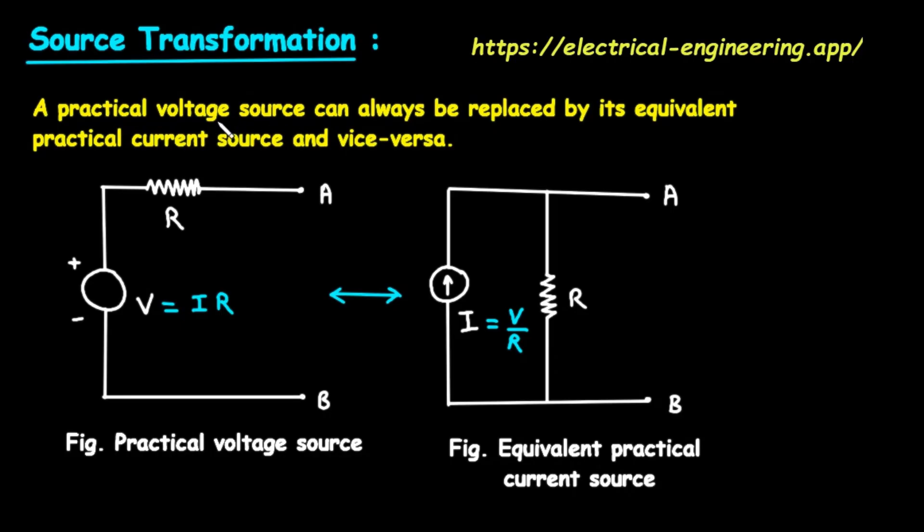First, what is a practical voltage source? Let's turn our attention to the diagram on the left, which is labeled Fig. Practical Voltage Source. In the real world, no voltage source, like a battery or a power supply, is perfect. A perfect, or ideal, voltage source would provide a constant voltage no matter what. But real sources have a small amount of internal resistance. This diagram is a model that represents a real world, or practical, voltage source.